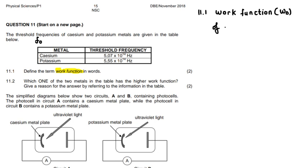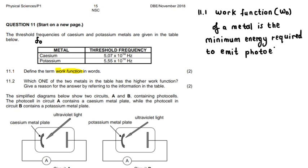Now the work function, and we denote the work function with W naught. So the work function of a metal is, again, the minimum, these are the keywords here, minimum energy this time. It's not a frequency, it's energy. It's the minimum energy required to emit photoelectrons from a metal surface. So the minimum energy required to emit photoelectrons from the metal surface is what we call the work function of the metal.